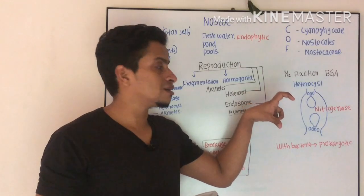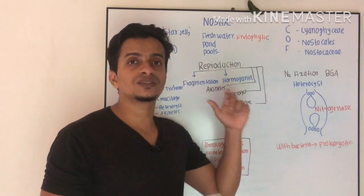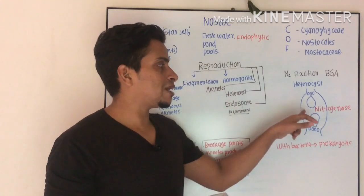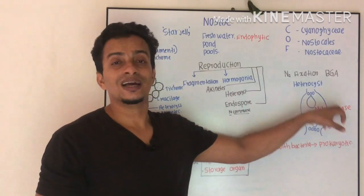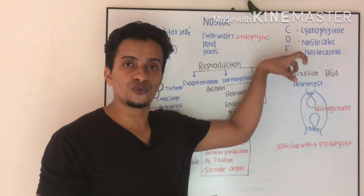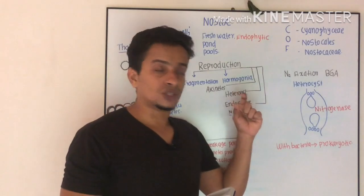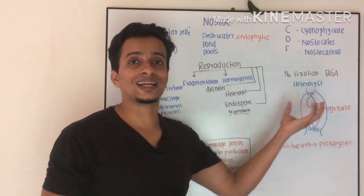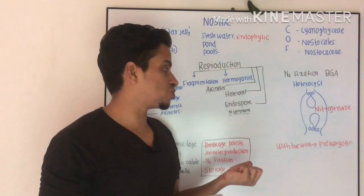You can see a specialized enzyme in the cell for nitrogen fixation, known as nitrogenase. This specialized enzyme will help fix atmospheric nitrogen, and thus the whole structure will act as a nitrogen storage structure.